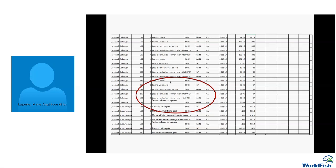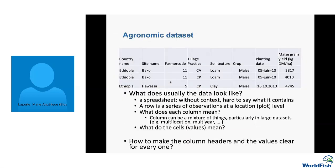As a secondary user of this data, it would take me some time to really clean the dataset and put it in a way where I can reuse it — even if the data are well described and I understand what it's about. Usually a row is a series of observations at a given plot location, but the column headers can be a mixture of things that make it hard to understand and reuse the data.